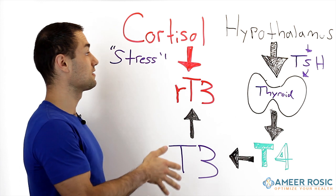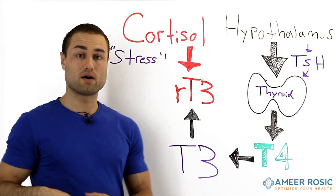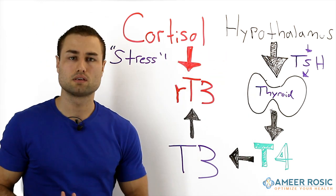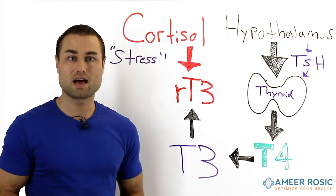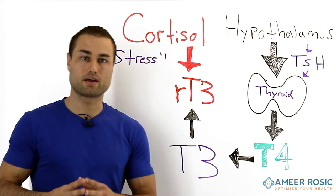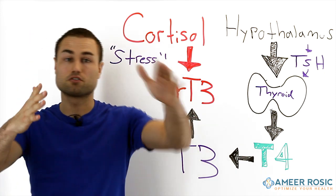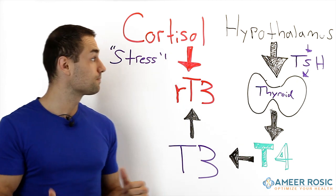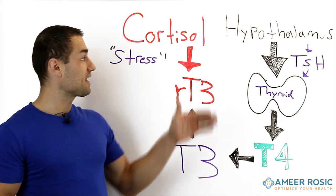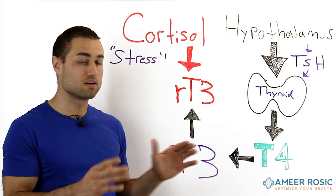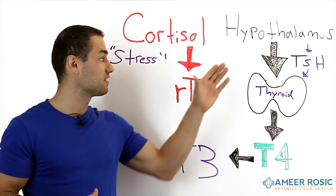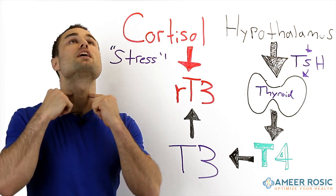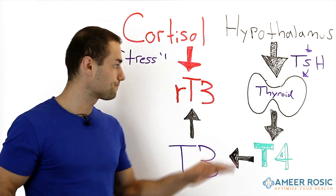The first component about a healthy metabolism is your hypothalamus. Your hypothalamus is like your master computer — it sends out signals throughout your body and tells your body what it has to do. The hypothalamus will send a signal called thyroid stimulating hormone to your thyroid gland, which is shaped like a butterfly.